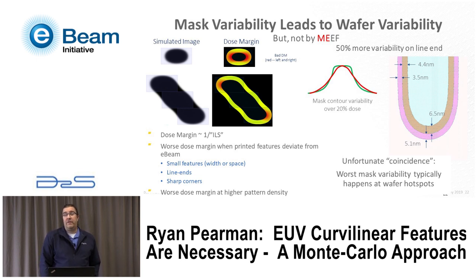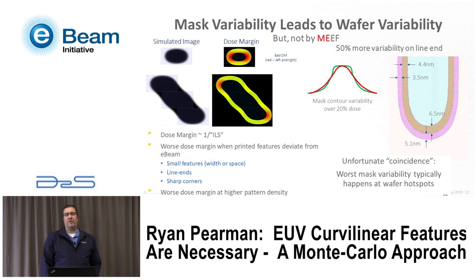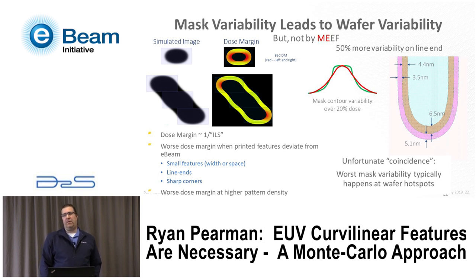Looking at two cut lines — a good one across the middle of a long 1D feature (green) and a bad one along a line end (red) — the variability through dose is about a factor of two more at the line end than at the regular line. That's actually a problem, and it's kind of a cosmic joke: where are the hot spots on wafer? It's not in the 1D feature — it's at these highly constrained, highly curved 2D regions where you have really bad focus control. But this is exactly the place where you also have your highest mask variability. We really want to see where mask variability gets worst and how to minimize its effect.